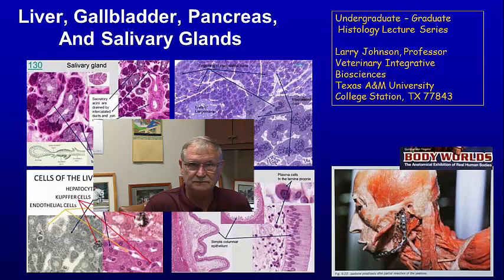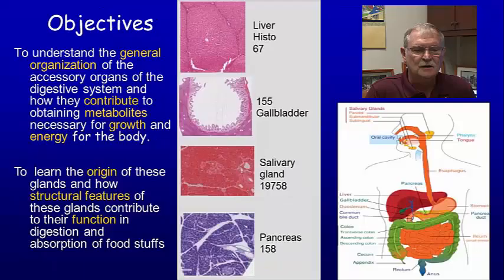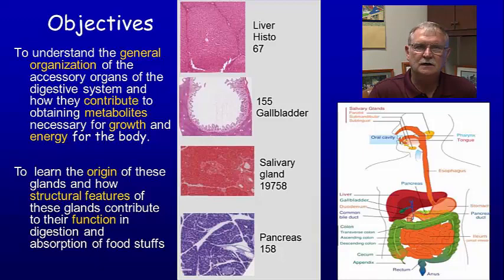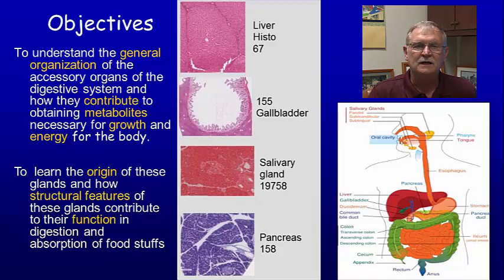These are organs and glands associated with the digestive system and indeed are the accessory components of the digestive system. We want to look at the general organization of these organs and glands and figure out how they contribute to obtaining metabolites for the body for growth and energy for movement, as well as help maintain the normal milieu of the body. We want to look at the origin of these cells and structures and look at how they contribute to absorption of food stuff.